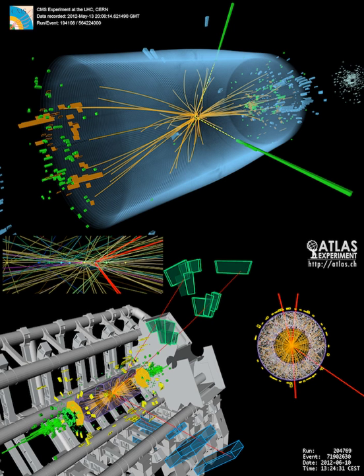On 14 March 2013, CERN confirmed that 'CMS and ATLAS have compared a number of options for the spin parity of this particle, and these all prefer no spin and even parity'—two fundamental criteria of a Higgs boson consistent with the standard model. This, coupled with the measured interactions of the new particle with other particles, strongly indicates that it is a Higgs boson. This also makes the particle the first elementary scalar particle to be discovered in nature.